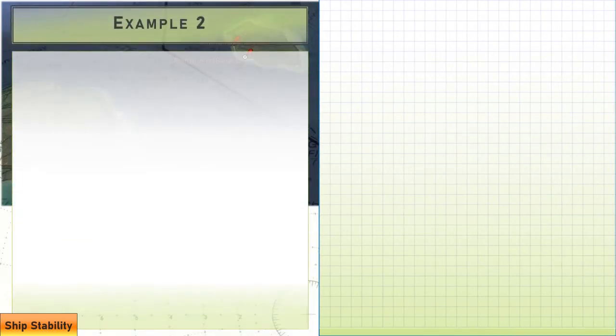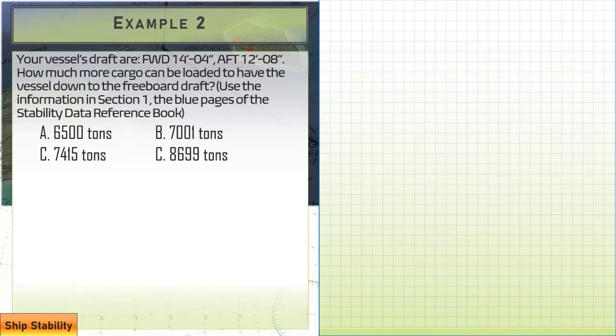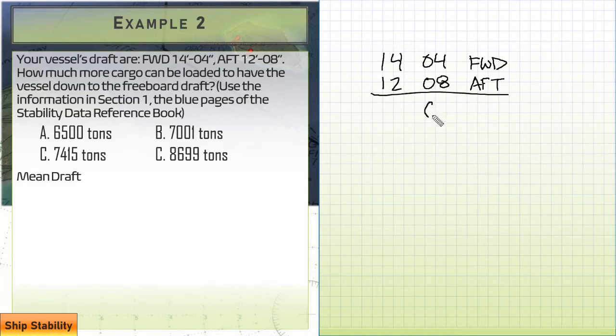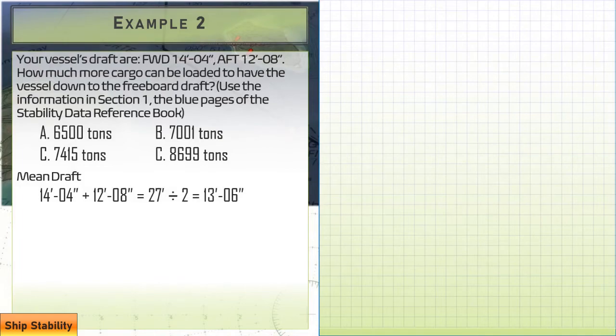Let's look at another one. Example 2. Your vessel's drafts are FWD 14'-04", AFT 12'-08". How much more cargo can be loaded to have the vessel down to the freeboard draft? We're going to be looking again at the same steps. Mean draft comes first. We're going to take 14'-04" forward, 12'-08" aft. It's going to give us an even foot here. That's 26... 27 feet. That's our combined draft. And then we're going to have to divide by 2 to get our average draft or our midship draft. And we're going to be looking at 13'-06".